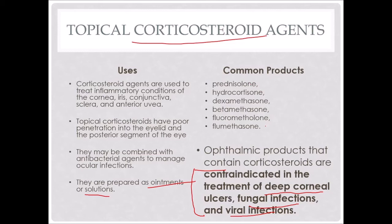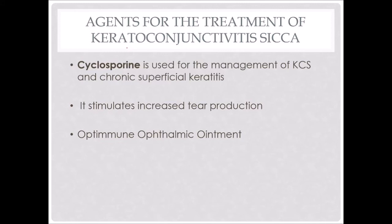When we're treating dry eye, known as KCS or keratoconjunctivitis sicca, the most common agent that we use is cyclosporine, also known as OptImmune. OptImmune is a fairly expensive medication; we can get cyclosporine compounded a bit more cheaply. It is used in the management of KCS and chronic superficial keratitis. It stimulates increased tear production, and you only need to use it once or twice a day. Any other medication you use in the eye typically needs to be used more than twice a day because the tearing will wash it out.